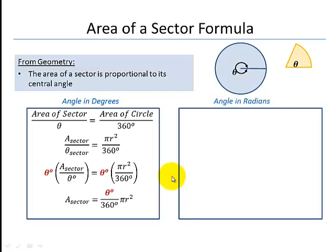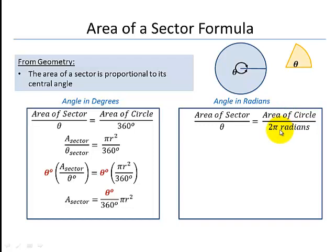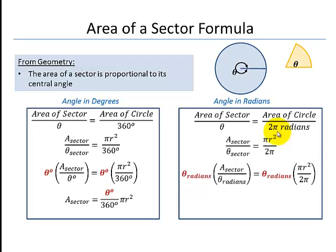We can do the same development with the angle measured in radians. Using the same ratio, the central angle of a full circle in radians is 2π. Following the same methodology and multiplying each side by the central angle of the sector in radians, we get the area of the sector equals one-half r squared theta, where theta is in radians.